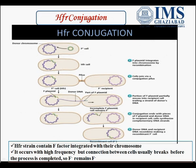The second type is HFR conjugation. HFR stands for high frequency recombination. The difference between HFR and F positive is that here the F factor is integrated with the chromosome of the bacterial DNA, and this cell is known as the HFR cell. When this HFR cell contacts an F negative cell through pilus, the F factor starts replication through the rolling circle model. However, this process takes 100 minutes, but due to the high frequency, contact between the two cells breaks before that time.